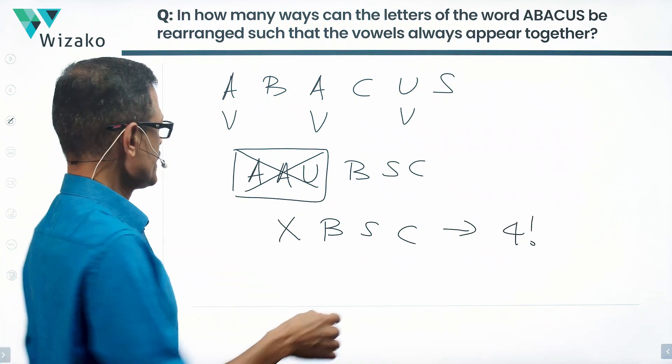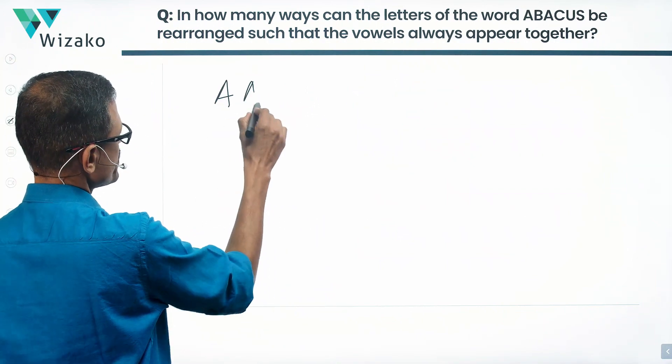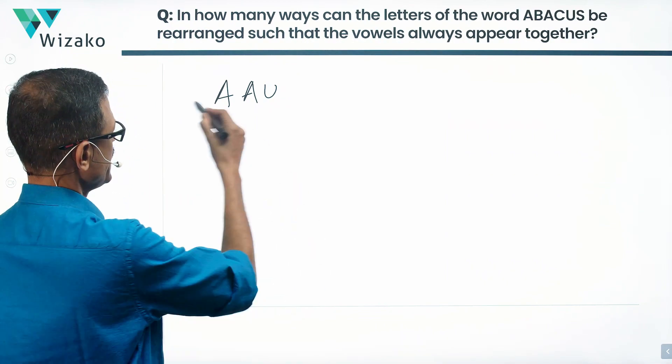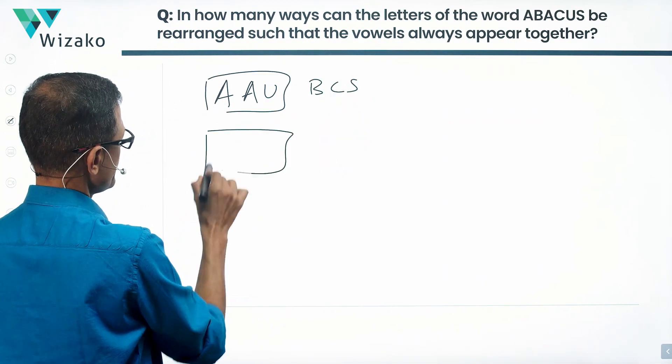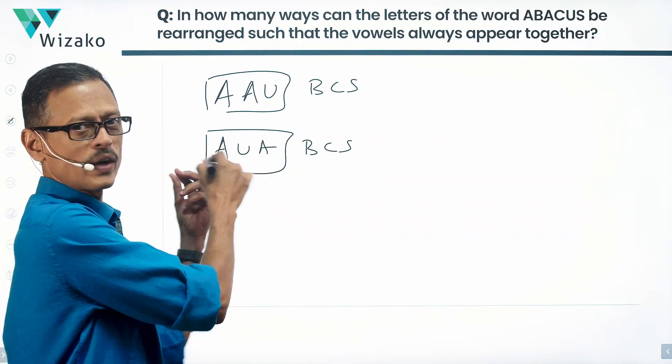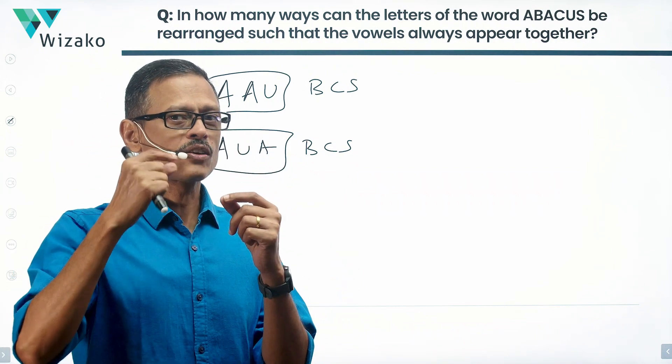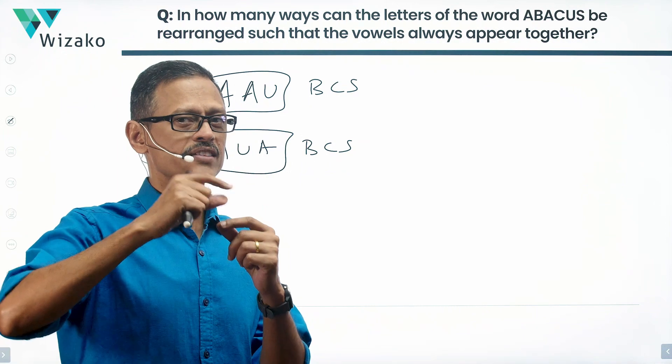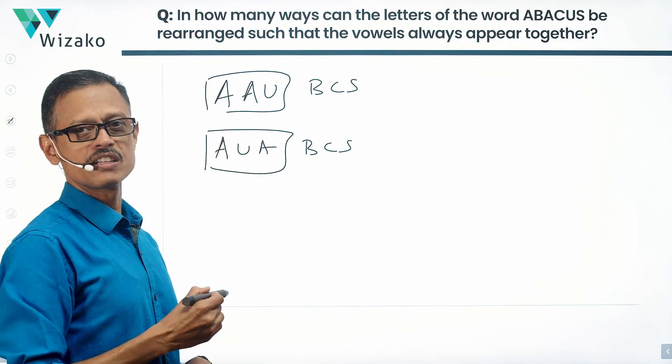Now that's not the end of the story. This unit X, which is your A, A, U, need not just be as A, A, U. I could rewrite it as A, U, A and B, C, S. Again the vowels are as one unit but this is a slightly different arrangement because within the unit of vowels, the vowels are not appearing as A, A, U - they are appearing as A, U, A. So how many ways can this unit of the three vowels reorder?